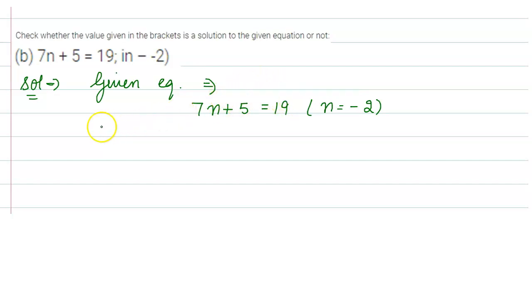In left hand side we have 7n plus 5, so it will become 7 multiplied by minus 2 plus 5. That is 7 into 2 is 14, plus 5, which is minus 9.